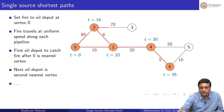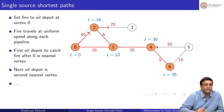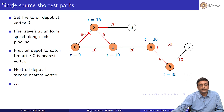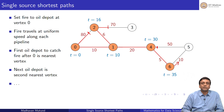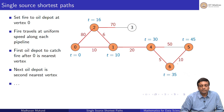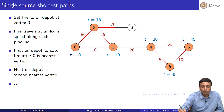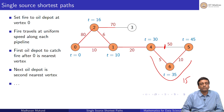A separate fire from vertex 6 starts going towards vertex 5, in addition to the old fire which is coming from 4. The separate fire from 6 will reach vertex 5 in 10 units of time. So at t equals 45, vertex 5 is going to burn. At this point, 15 units of time have passed since vertex 4 burned.